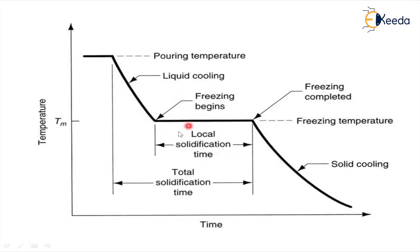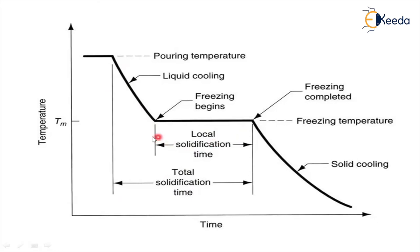This starting point is also represented as the local solidification time. Local solidification time is the time between the freezing starting temperature and the time at which freezing is completed. Total solidification time also includes the liquid cooling phase — from when pouring is completed until solidification ends. Adding liquid solidification time and solid solidification time gives the total solidification time.